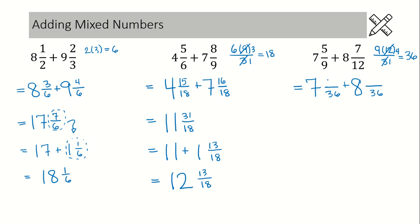Next I need to figure out my numerators by comparing the denominators. 9 times 4 is 36, so 5 times 4 is 20. In my next fraction, I had a 12 and that became 36, so I'm multiplying by 3 — 7 times 3 is 21. Now that we have common denominators, we can add everything up. Whole numbers first: 7 plus 8 is 15. We don't add the denominators; we do add the numerators — 20 and 21 is 41.